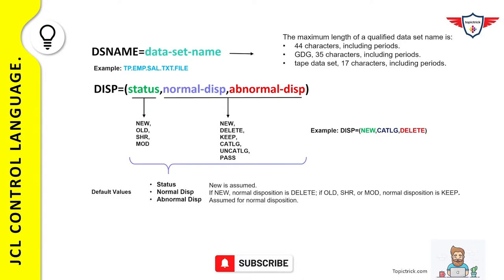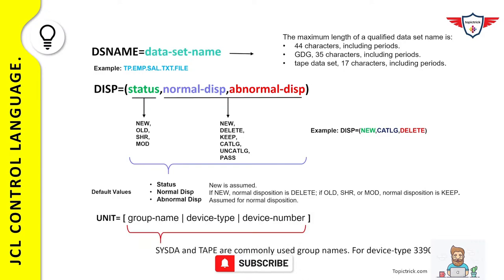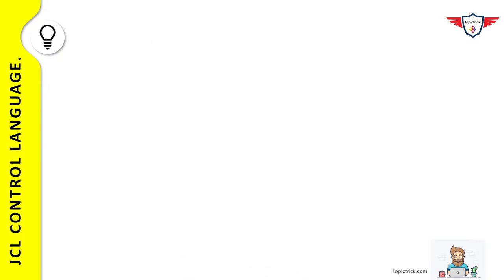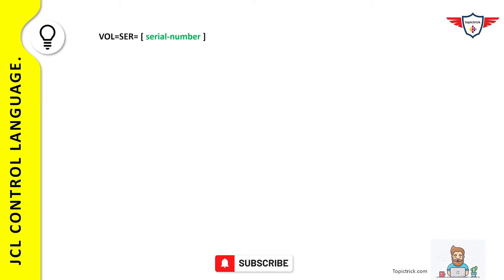The third sub-parameter — abnormal disposition — instructs the OS what to do if the job ends abnormally. Possible values: DELETE, KEEP, CATALOG, and UNCATALOG. The UNIT parameter specifies the tape or disk device where your dataset resides. If the dataset is already cataloged, UNIT is not required. Generally, SYSDA or TAPE is used, or a specific device number.